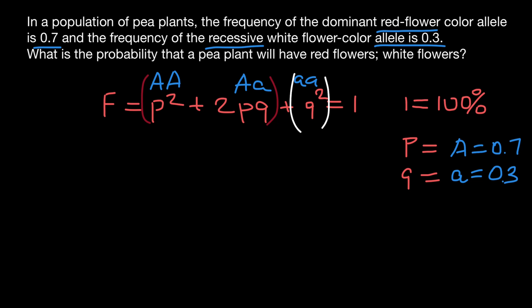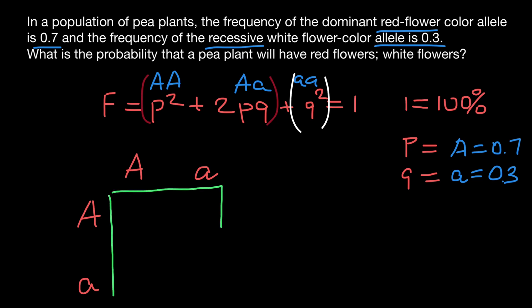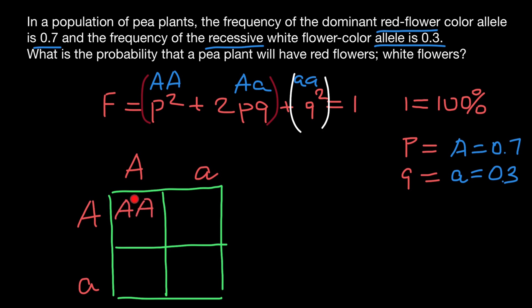We have two alleles in our gene pool: dominant allele A and recessive allele a. If we build a simple Punnett square, we can see the following combinations: dominant allele A with dominant allele A — one inherited from each parent — then dominant allele A with recessive allele a, and finally two recessive alleles a.